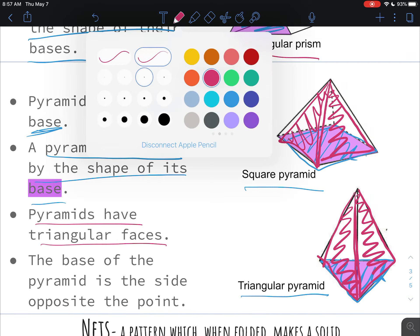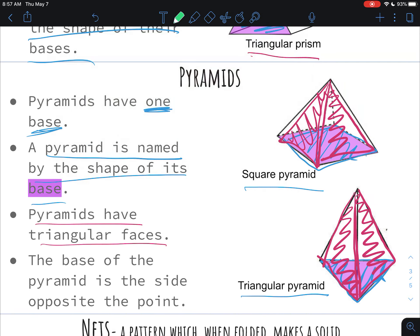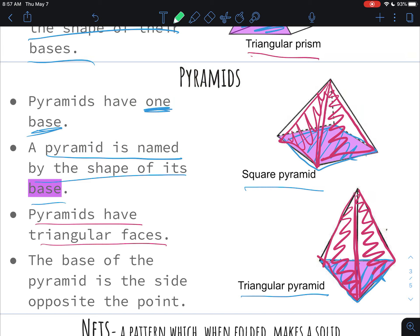And for some reason this is a fun fact that you're supposed to know, but they would like you to know that the base of the pyramid is opposite of the point. So point, base, they are on opposite sides, which I feel like that's how all pyramids are, but fun fact.